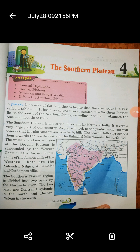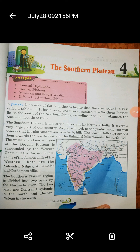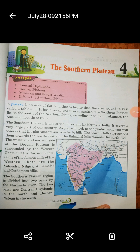वो South की तरफ होता है Northern Plains के, और उसका extend Kanyakumari तक है। And we all know that Kanyakumari is the Southernmost tip of India. The Southern Plateau is one of the most important landforms in India. It covers a very large part of our country.